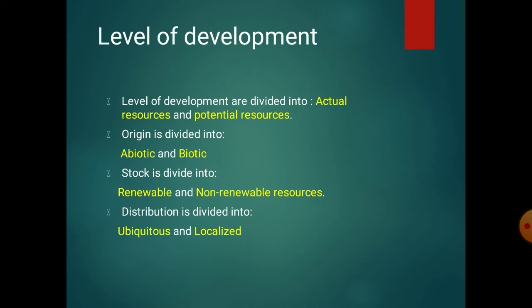On the basis of level of development, resources are divided into actual resources and potential resources. On the basis of origin, they are divided into abiotic and biotic — all living and non-living organisms are biotic and abiotic respectively. On the basis of stock, resources are divided into renewable — for example, water — and non-renewable — for example, coal.